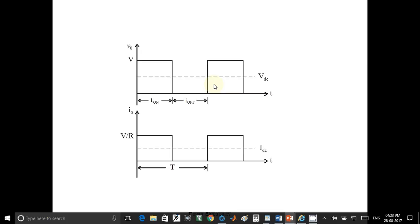These are the waveforms for step down chopper. We can see T on and T off. They will have total time equal to T. The output voltage is V. These are the waveforms for output voltage. The same can be observed for current also. Output current is given by V by R.